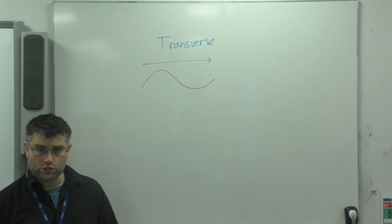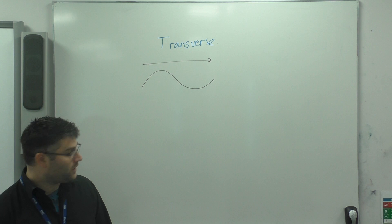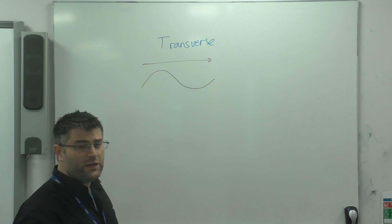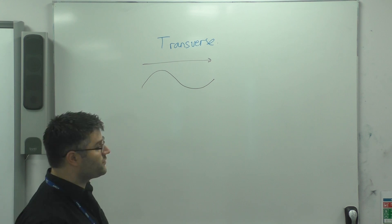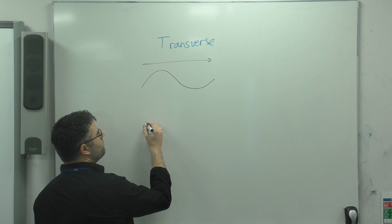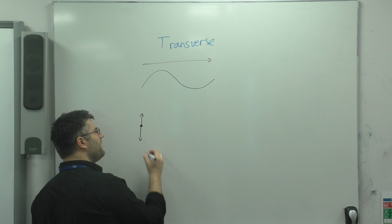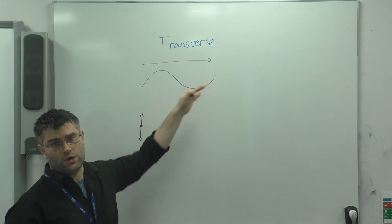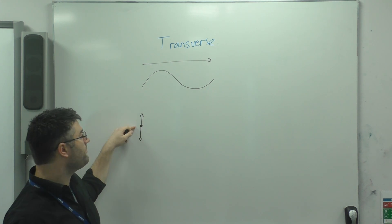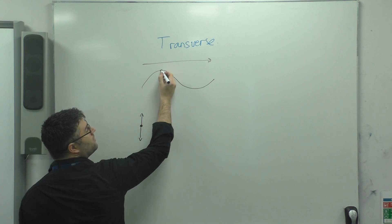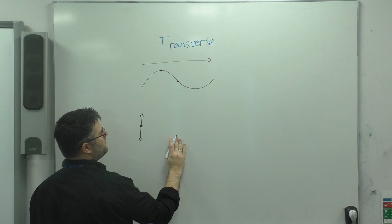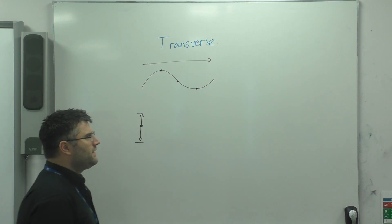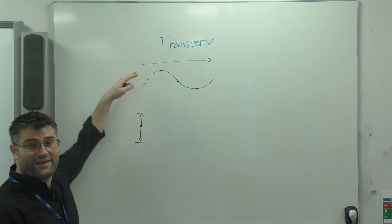The idea here is that energy is transferred between two positions by movement of particles, although not all transverse waves require particles in order to travel. But if we are talking about particle movement with transverse waves, then the particles are moving up and down, and that up-and-down movement is represented by each of these positions on the wave. The particle from its equilibrium position will move up to a specific point, then back to equilibrium, then down to another furthest displacement point. We can show the particles are moving in that orientation.